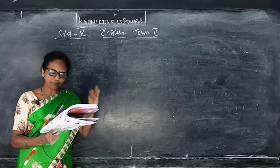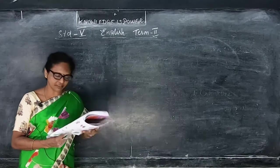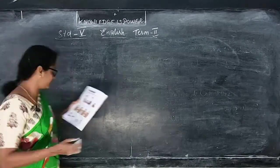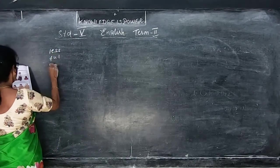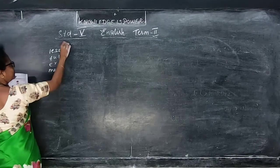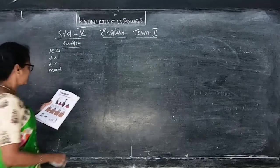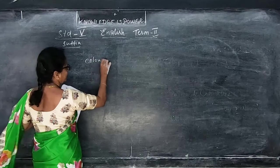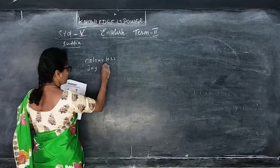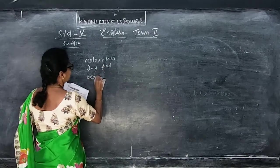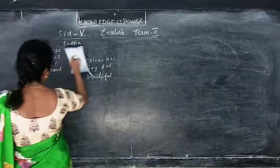When we add the suffix '-less' at the back of a word, it gives a certain meaning. Suffixes include: -less (L-E-S-S), -ful (F-U-L), -er (E-R). For example: color + less = colorless, joy + ful = joyful, beauty + ful = beautiful. You have to join the words using these suffixes.